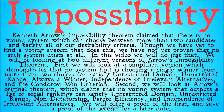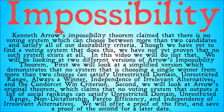We'll offer a proof of the first and save a proof of the second for a later date. This is because when I do proofs, I really like to do them line by line very logically, and we don't have the set theory background in any of these videos so far to do that kind of proof for Arrow's theorem. Hopefully, we'll look at that when we get to set theory and higher order logic and come back to Arrow's Impossibility Theorem then.